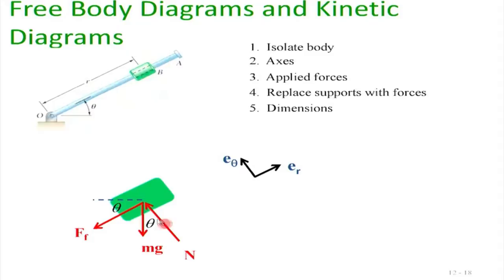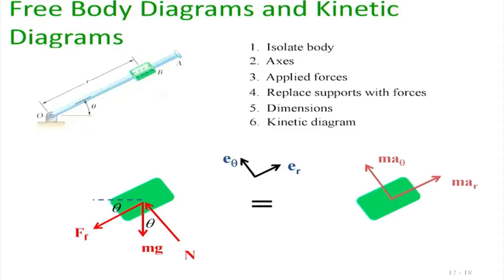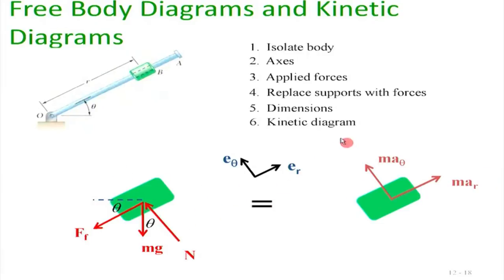We place all dimensions and angle θ, then draw the kinetic diagram: the sum of all forces in the radial direction equals m times the sleeve's acceleration in the radial direction, and the sum of forces in the θ-direction equals m times the sleeve's acceleration in the θ-direction.